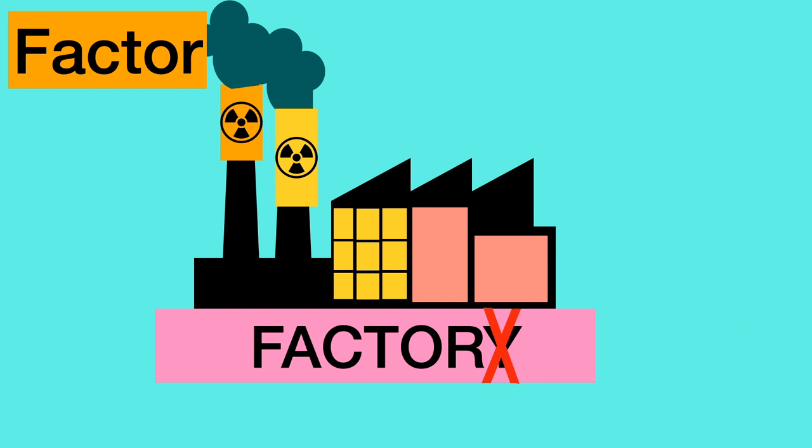Factoring is finding what to multiply together to get an expression. The product 9 is calculated when 1 and 9 are multiplied. A factor pair is a combination of two factors which can be multiplied together. 1 and 9 is a factor pair.